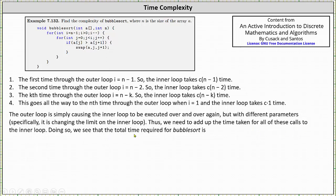Doing so, we have the total time required for bubble sort is f of n is equal to c times the quantity n minus one plus c times the quantity n minus two, all the way down to plus c times one.